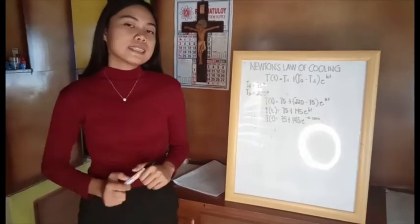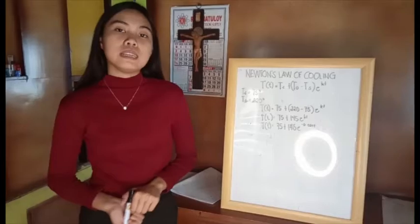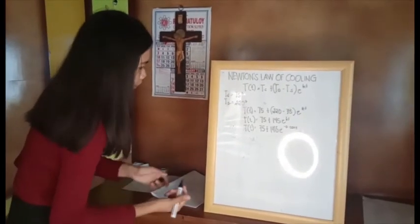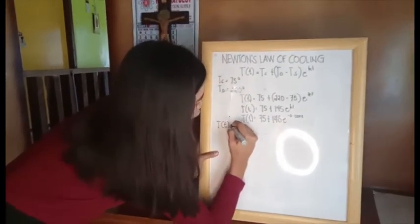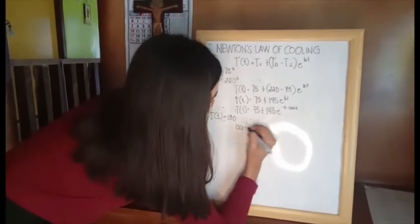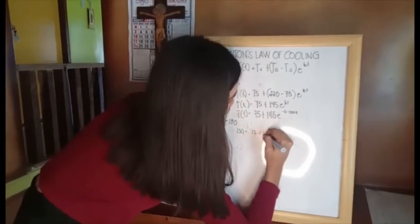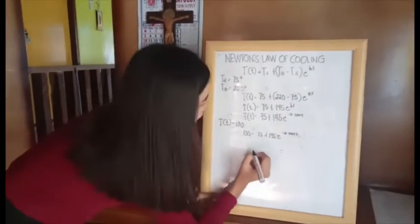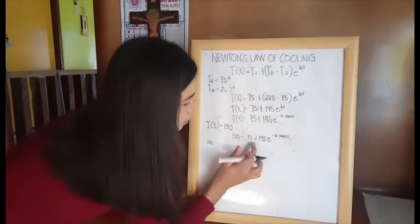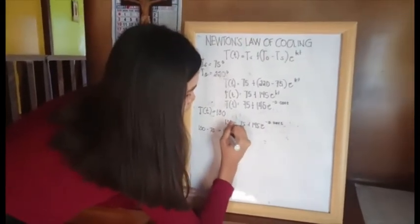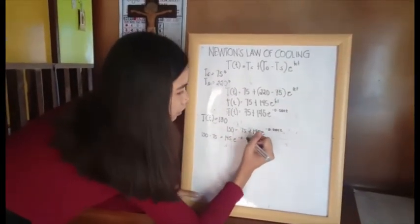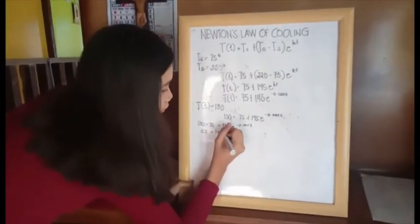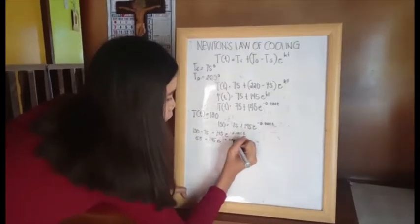Now we are going to solve Part B, which is the time it takes for the soup to cool to 130 degrees Fahrenheit. Using the equation, we set T(t) equal to 130: 130 equals 75 plus 145·E^(−0.0211·T). Moving 75: 130 minus 75 equals 145·E^(−0.0211T), so 55 equals 145·E^(−0.0211T).